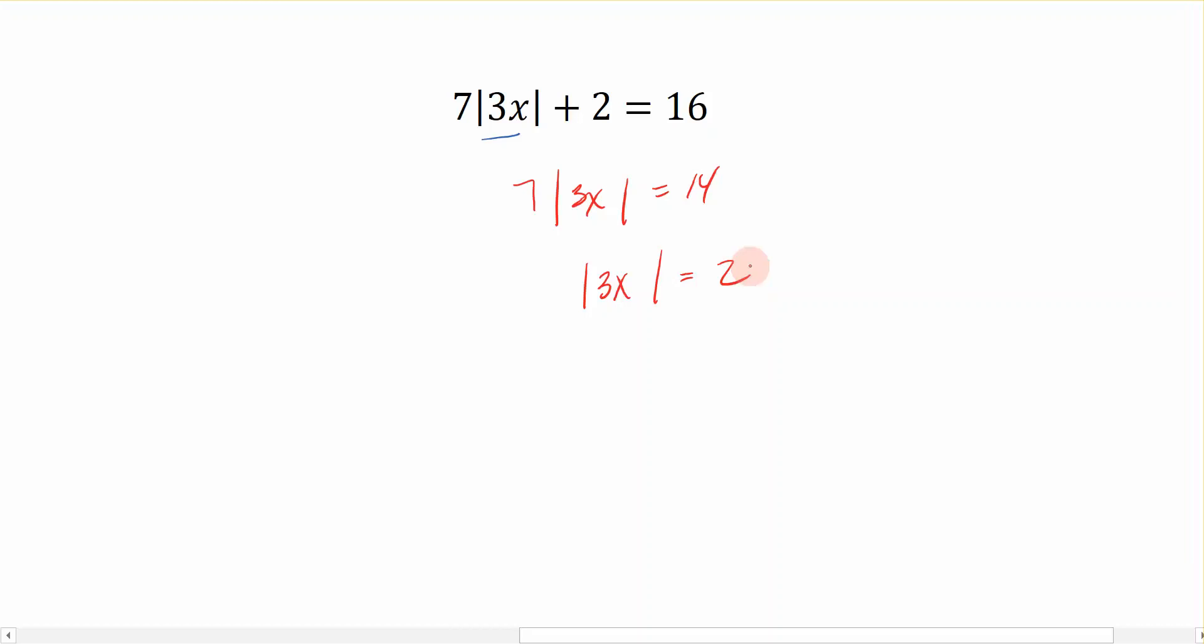Now that we have it whittled down to absolute value equal a number, we separate it out into the formula that we just looked at above. So this says that 3x can be equal to 2, or 3x can be equal to negative 2, and we solve each of these two equations. On the left-hand side, we divide both sides by 3 and find out that x can be equal to 2 thirds, or x can be equal to negative 2 thirds. And those are the two solutions that we have for this absolute value equation.